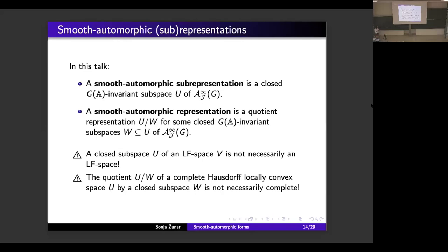Recall that A∞_J(G) is an LF space — it is not a Fréchet space. So there might exist smooth automorphic sub-representations whose topology is not the LF topology. Also, quotients have their own problems: it turns out that if we take a quotient of a complete Hausdorff locally convex space by its closed subspace, what we obtain is not necessarily complete. This means that in this definition, we implicitly assume that U and W are not only some closed G(A)-invariant subspaces of A∞_J(G) such that W is contained in U, but we also implicitly assume that the quotient U mod W is complete.